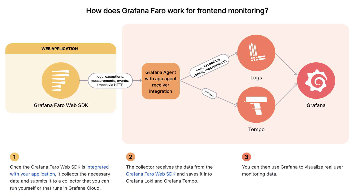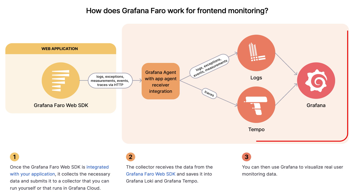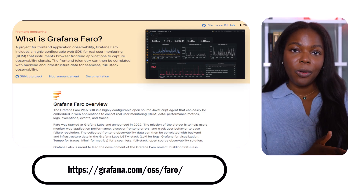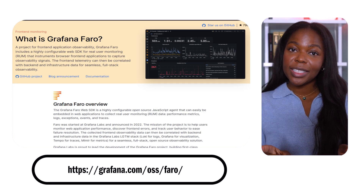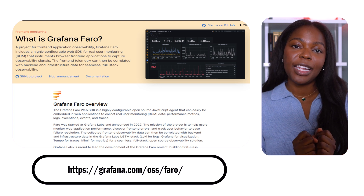In this video, we'll explore Grafana Faro, a powerful front-end observability solution, and walk through a hands-on tutorial to help you easily get started with Faro. Grafana's front-end observability comes in two key parts: Faro, which is open-source software for retrieving and sending metrics, and front-end observability, which is only available in Grafana Cloud and is Grafana's fully managed solution for real user monitoring. In this video, we'll focus exclusively on Faro, but make sure to check out the next video in this series to learn more about front-end observability.